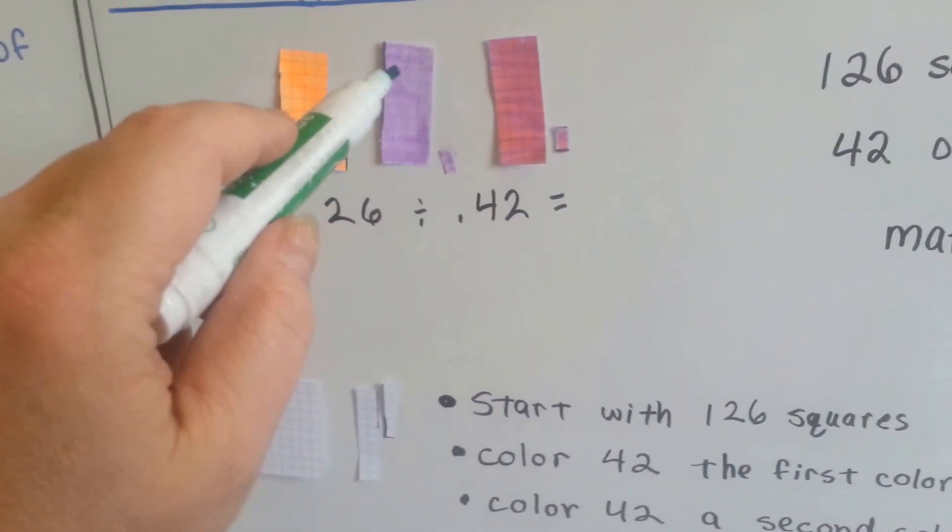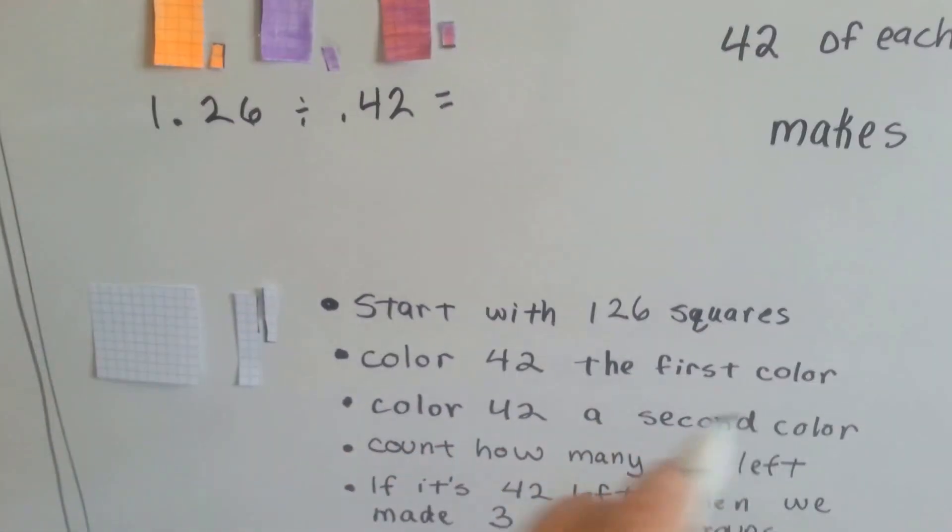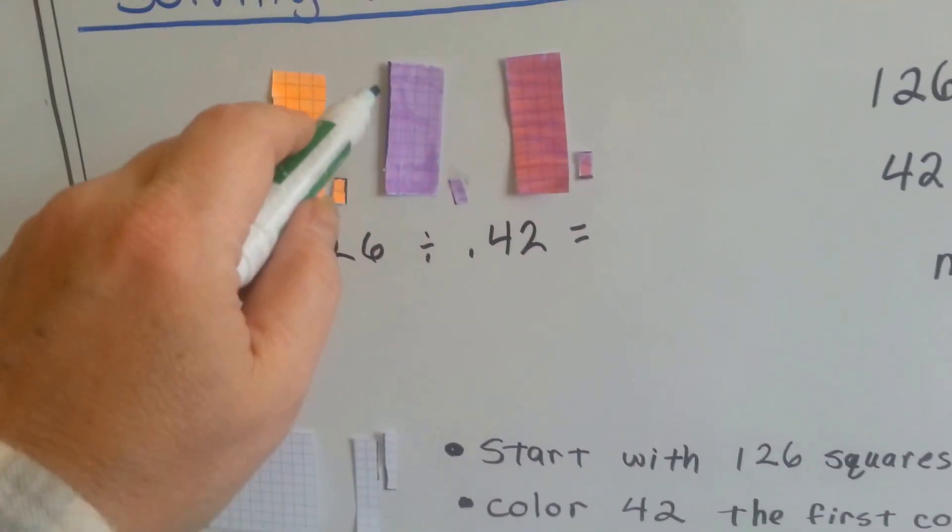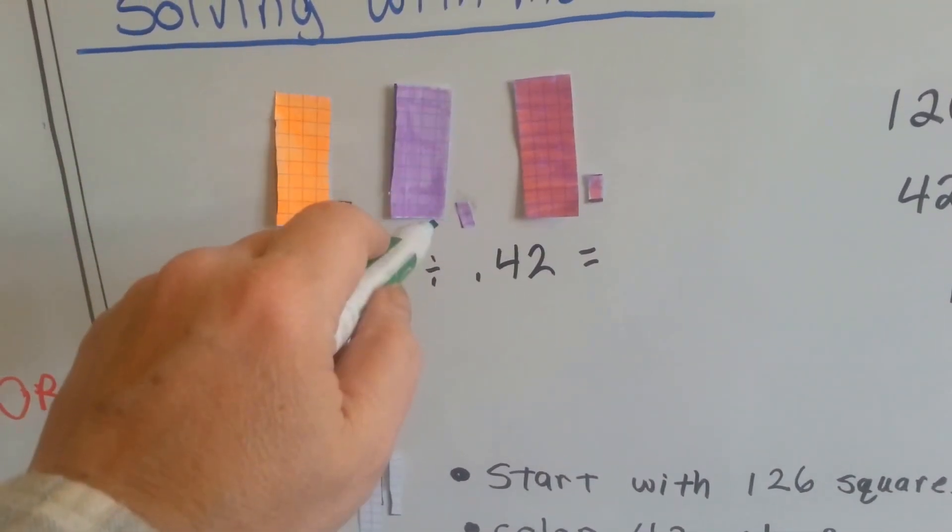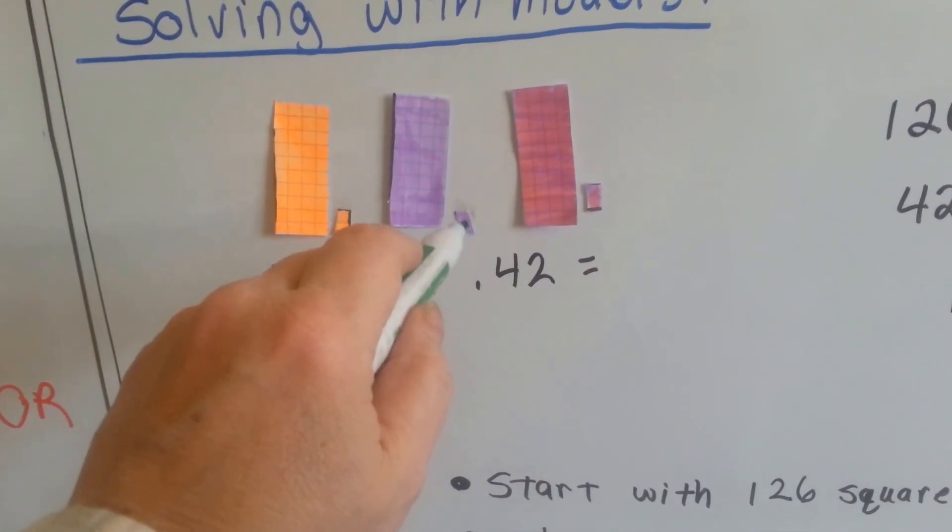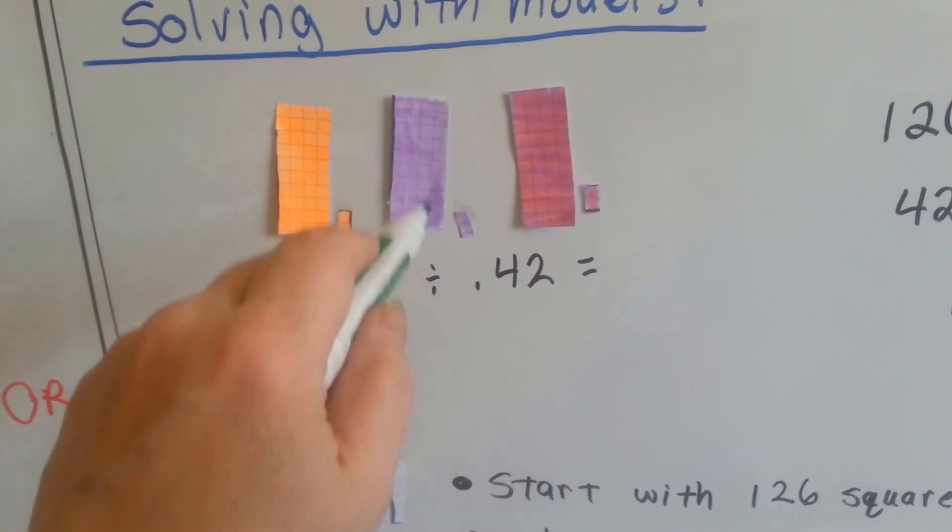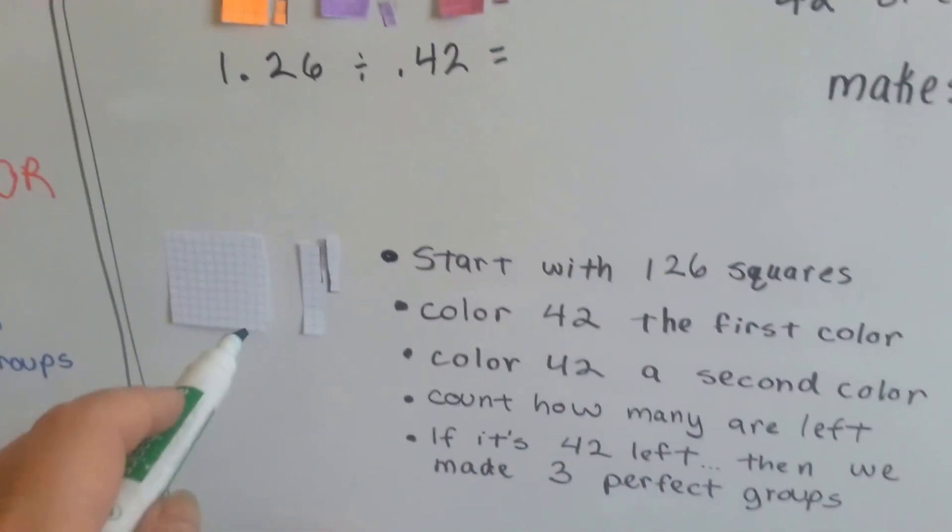Then I color 42 of them a second color. One, two, three, four. Four tens is forty, and two more makes 42 hundredths, because each square is a hundredth.